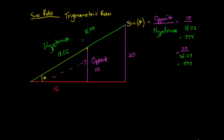So the sine ratio says that if we observe this ratio occurring — our opposite divided by our hypotenuse — then we can work out exactly what angle we have.